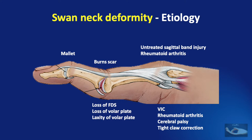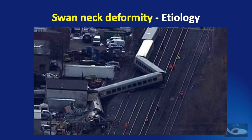So primarily the pathology may be in one or two joints but all three joints of the finger ultimately get affected — something like a train accident where the coaches collapse. Now let us try to understand how this collapse occurs in the finger by looking at the mechanics involved in the different etiologies.